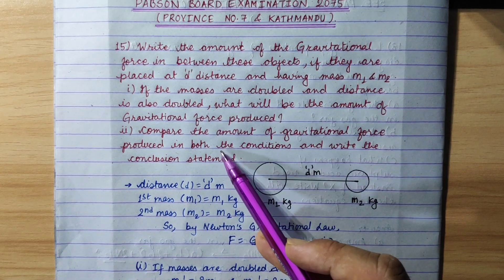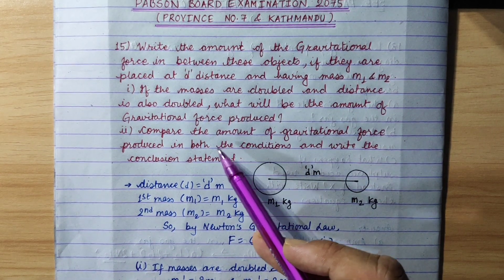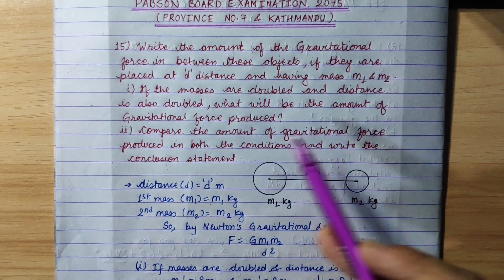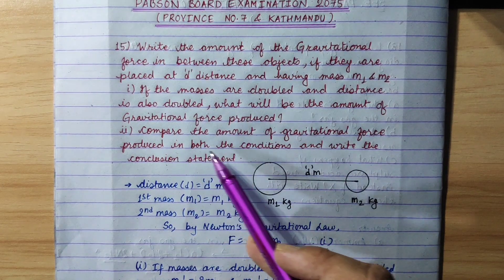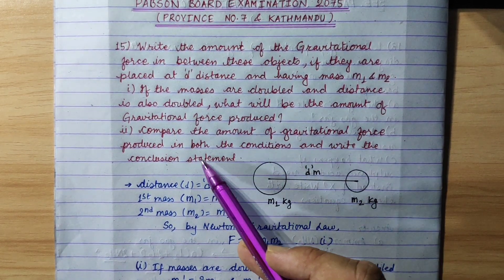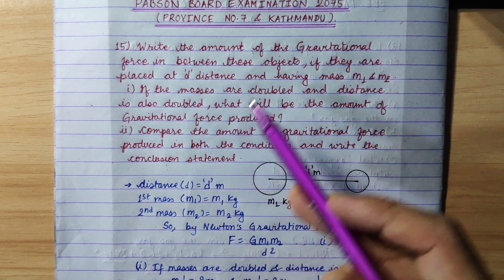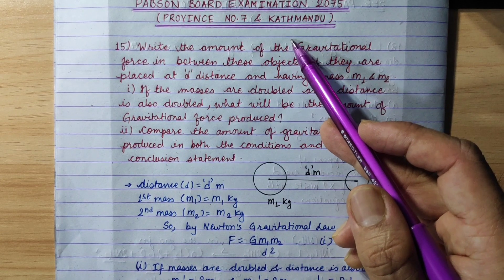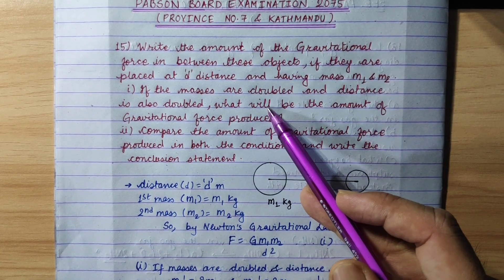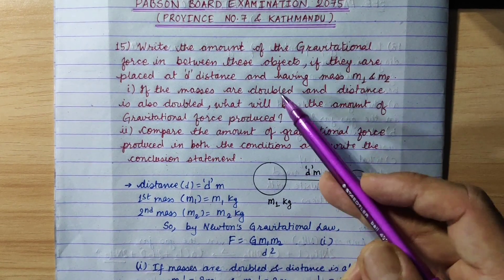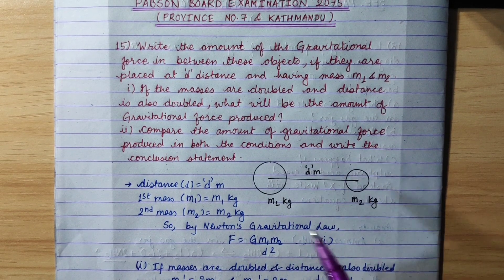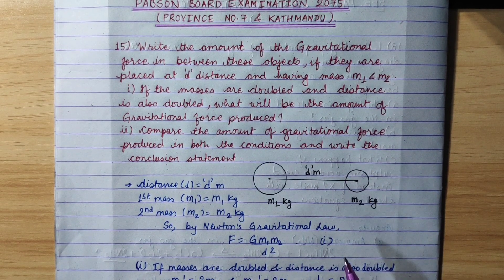The second sub-question: compare the amount of gravitational force produced in both conditions and write the conclusion statement. In this new condition, the gravitational force — compare the conclusion statement.